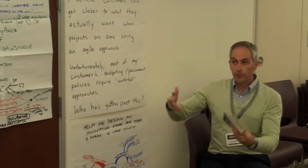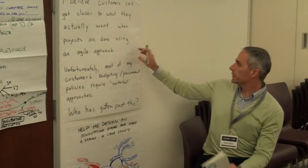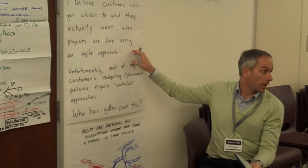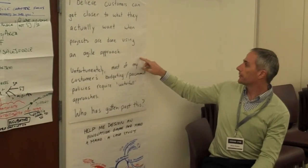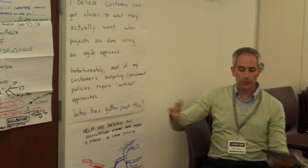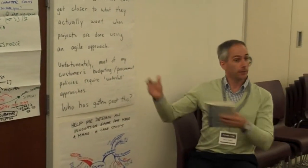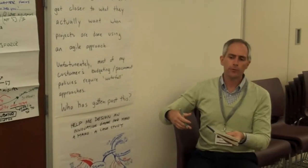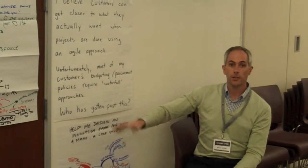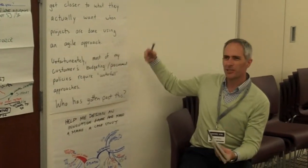Give them waterfall deliverables that are actually agile things in disguise. Do things like accept change—make change requests very expensive in a typical process, but we'll do it for free. If you just don't do features at the bottom of your priority list, try to work with them in their language and their way.